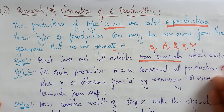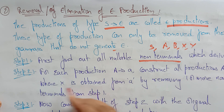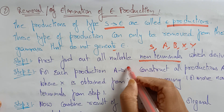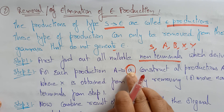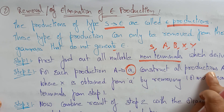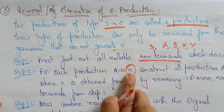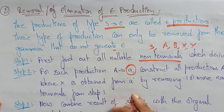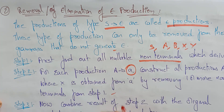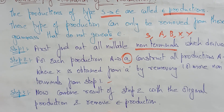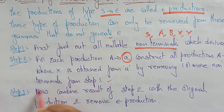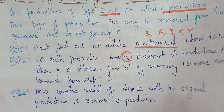Second step: suppose a non-terminal is deriving an epsilon production. For each production A determines something on the right-hand side, construct all productions A determines X, where X is obtained from A by removing one or more nullable non-terminals found in step 1. Then combine the result of step 2 with the original productions and remove the epsilon productions.